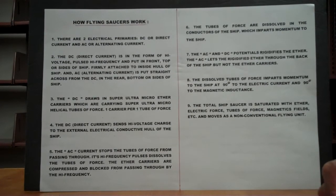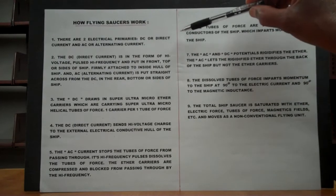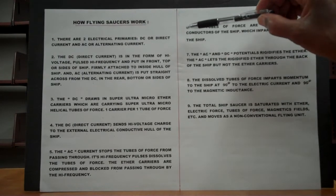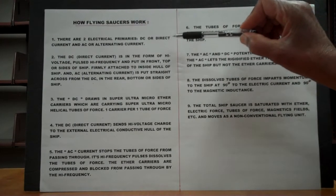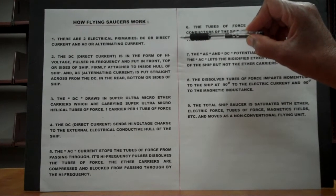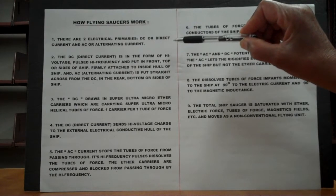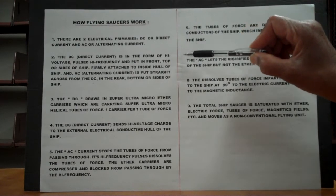Number one: there are two electrical primaries — DC, or direct current, and AC, or alternating current.